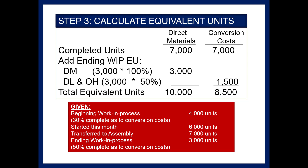You may ask about the beginning work in process. We have included it because in these manufacturing situations, those are the first units completed — the 4,000 beginning units were completed within the 7,000 units transferred. If you were using FIFO, you would have to remove them so you could have a beginning and a current layer, but we are not using FIFO.